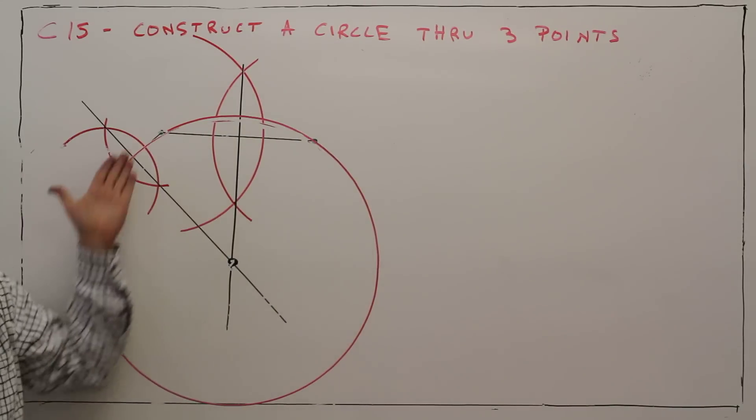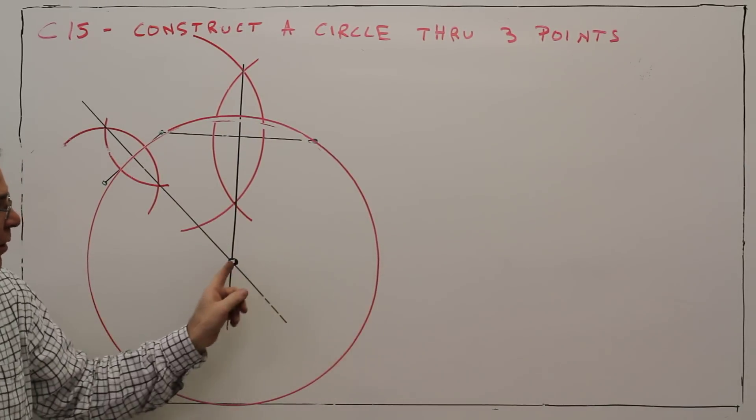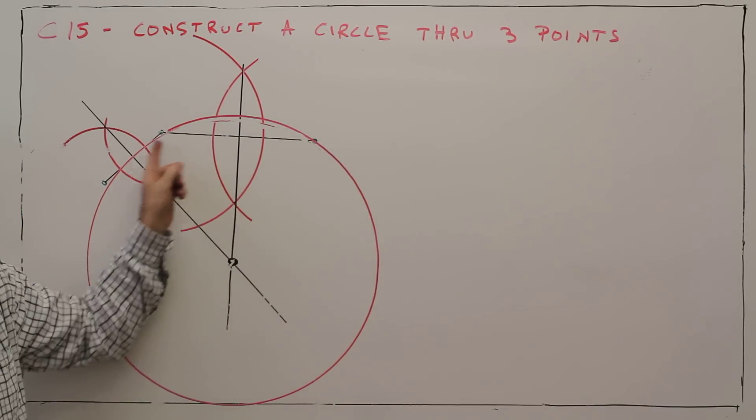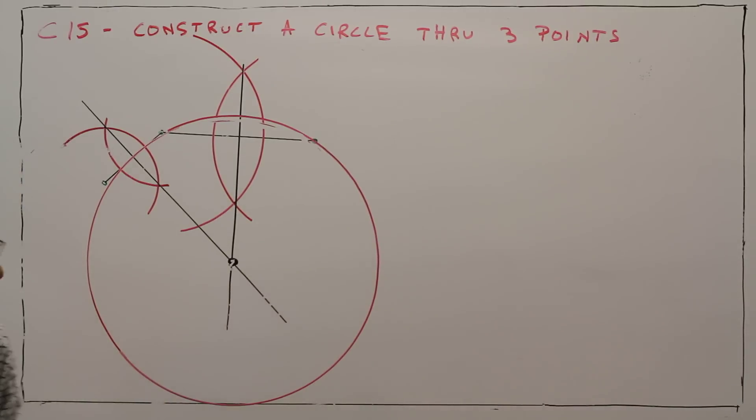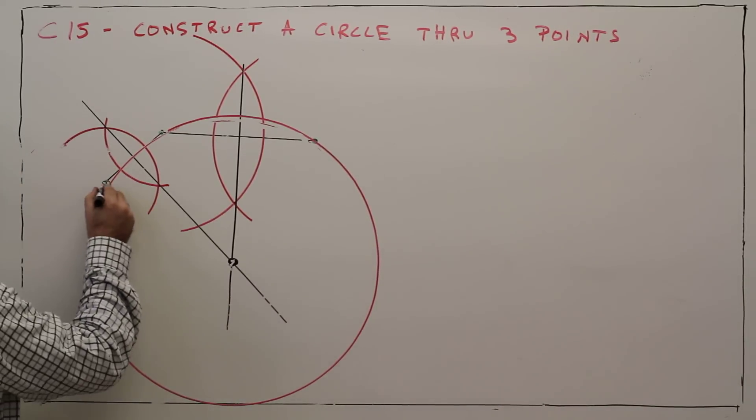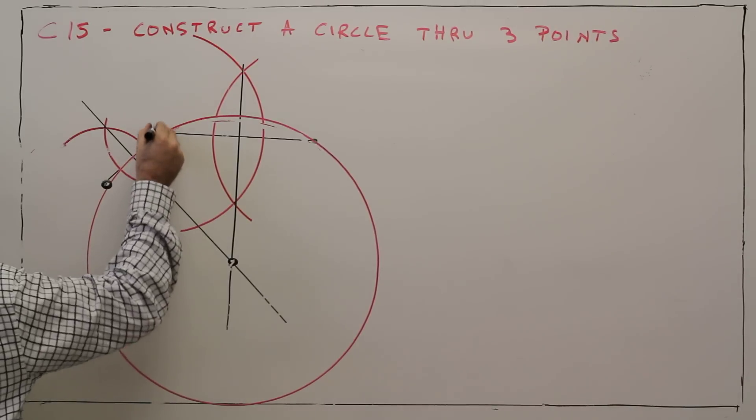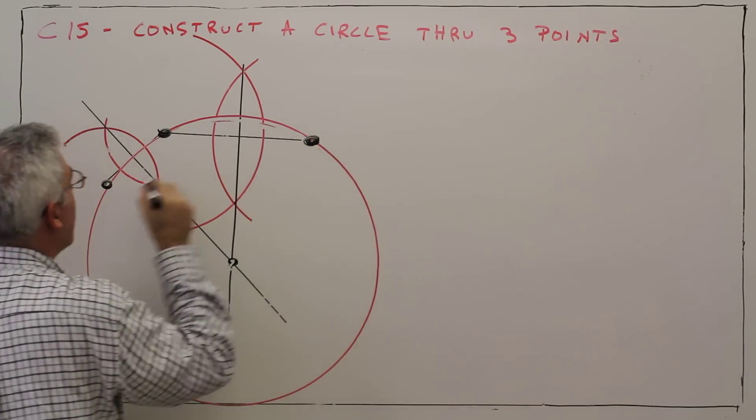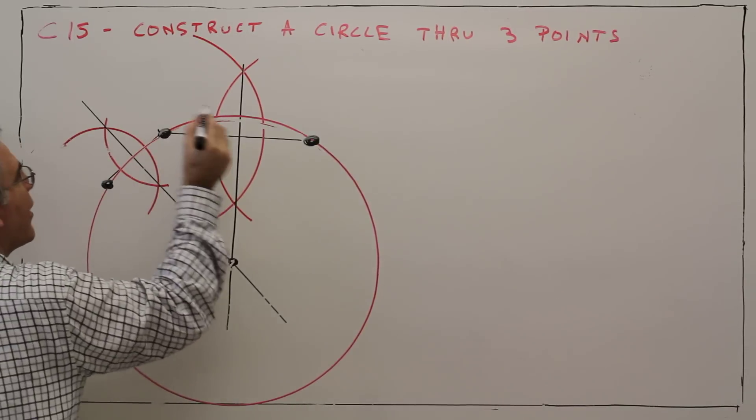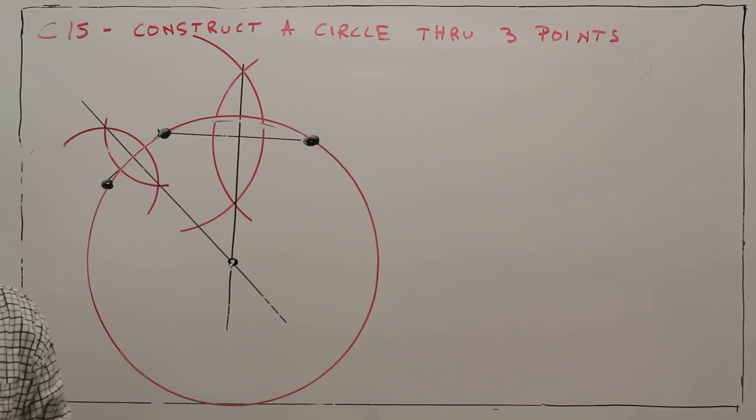But what I've just done is created one circle with the center point, given those three points that lie on the circle. And again, a little secret. Just make super large points to help conceal some of your flaws. And there you have it.